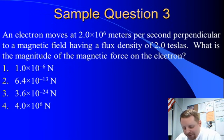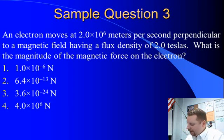Sample question 3. An electron moves at 2 times 10 to the 6 meters per second perpendicular to a magnetic field having a flux density, or a magnetic field strength, of 2 teslas. What is the magnitude of the magnetic force on the electron?